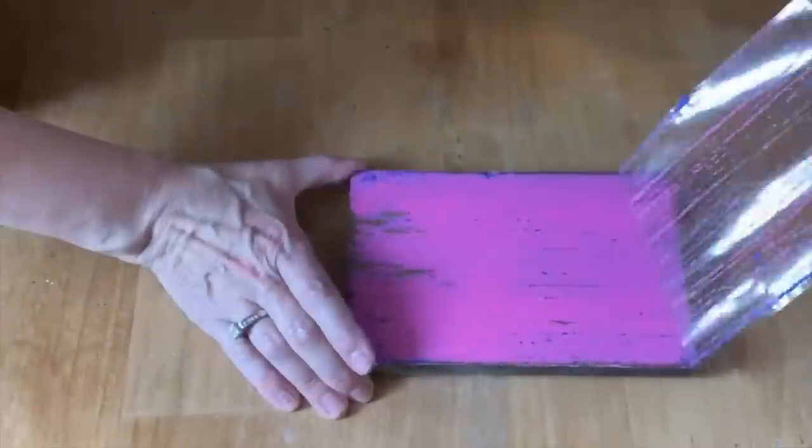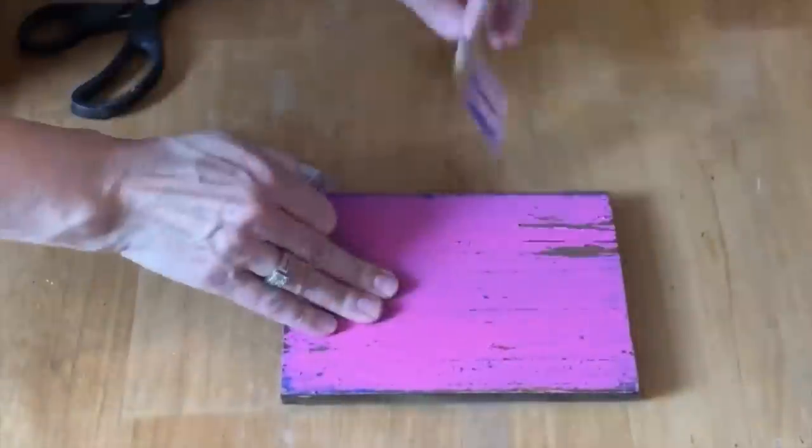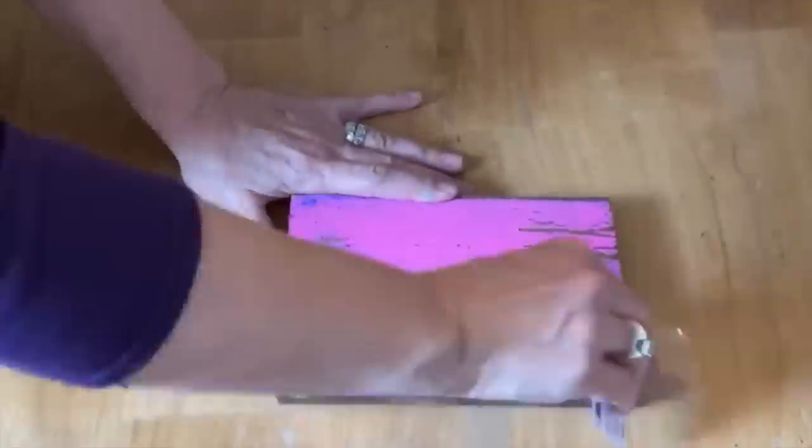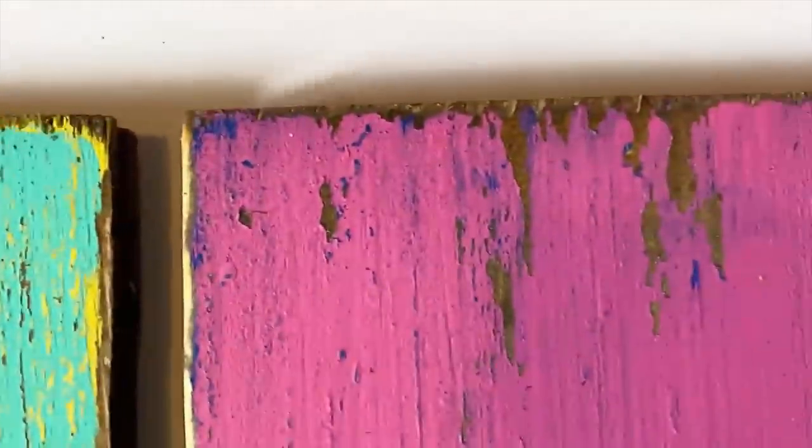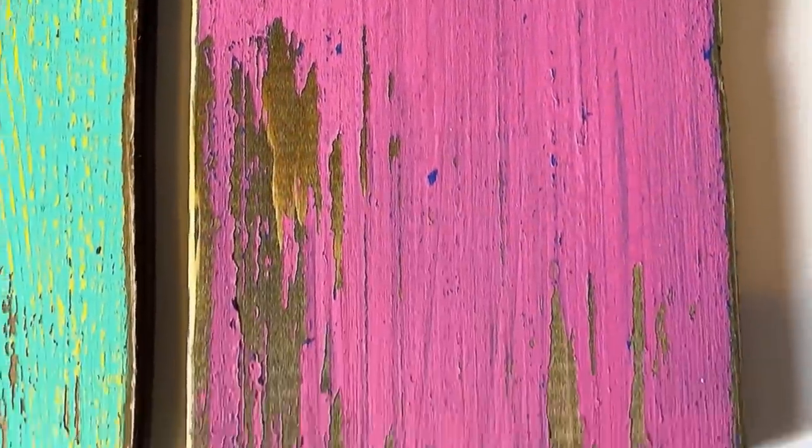Then you just have to peel away that tape and anywhere there was wax, the tape is going to peel it off and it's going to leave you a beautiful chippy finish. This is a great technique if you don't have a sander or you don't want to make a mess. You can just create chippy paint with a little bit of packing tape.